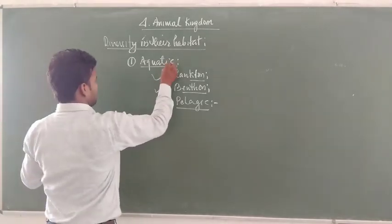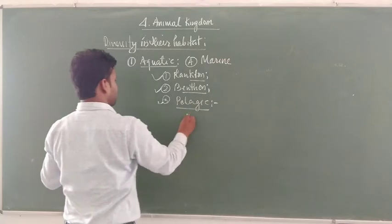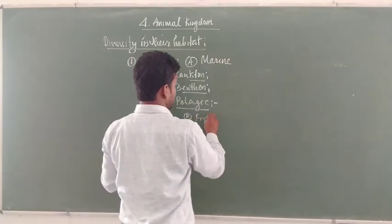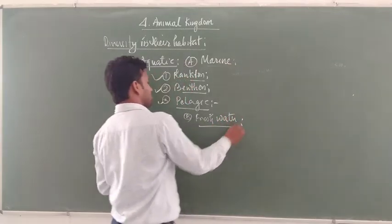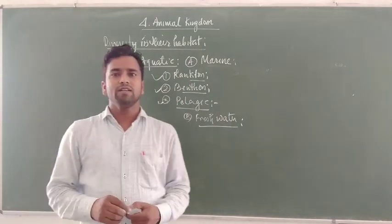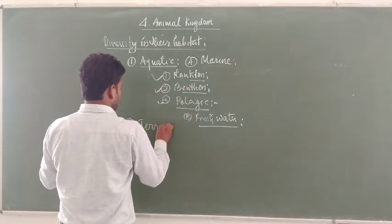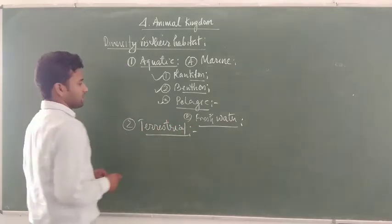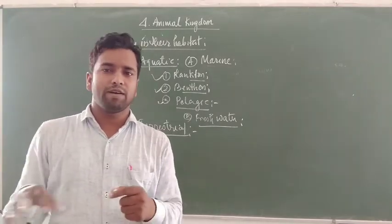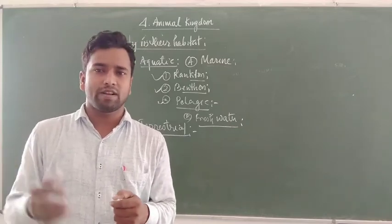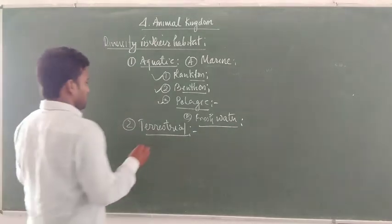Besides these categories, in aquatic habitat animals may live in two types of water: marine water - present in salty water, especially in sea water - and freshwater conditions, where they are present in ponds or lakes. Animals are also found on the terrestrial region. Many animals move on the terrestrial region - present on the surface of land. They are classified in many categories; insects and humans are also considered in this category.